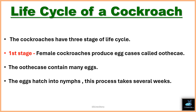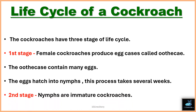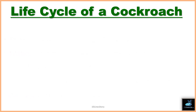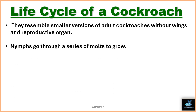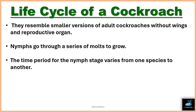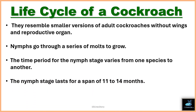This hatching process takes several weeks. In the second stage, nymphs are immature cockroaches. They resemble smaller versions of adult cockroaches but without wings or reproductive organs. Nymphs go through a series of molts to grow. The time period for the nymph stage varies from one species to another.